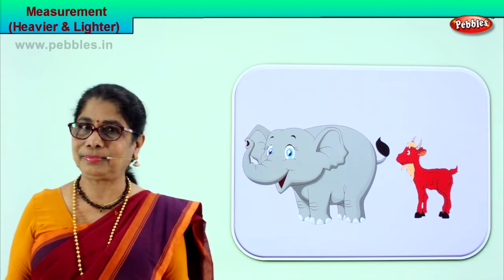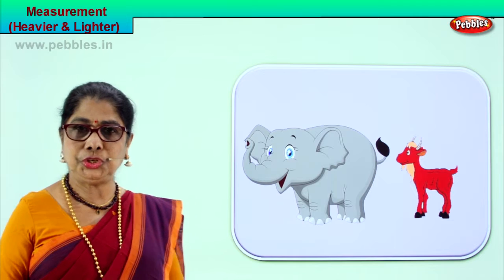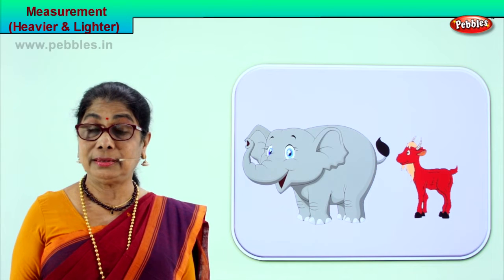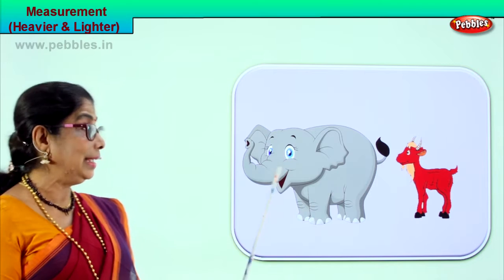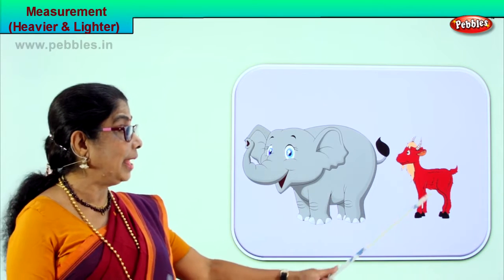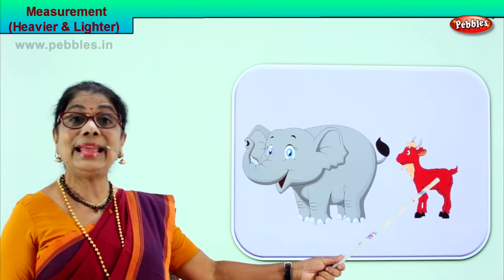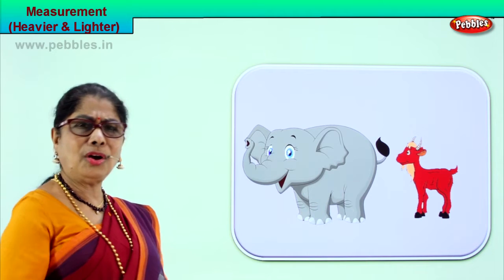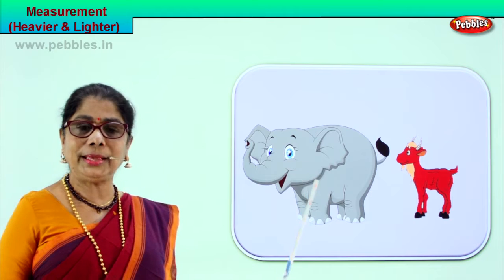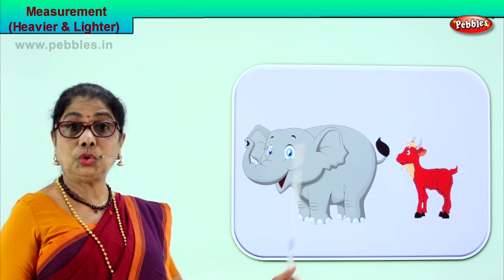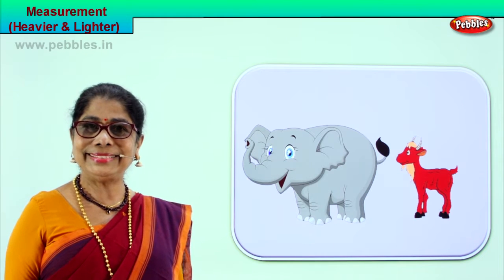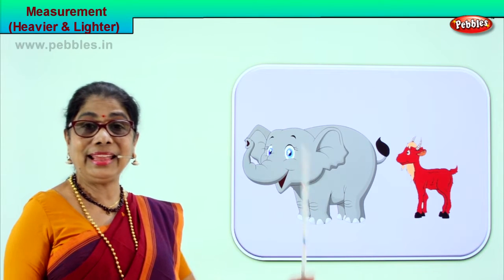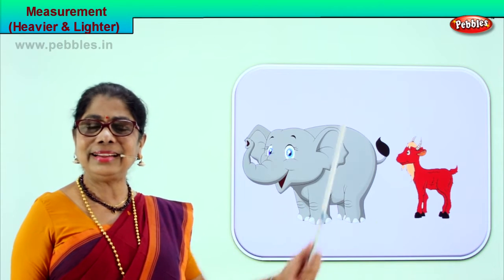Heavier, lighter. Now let's look at another picture. If you put on a big huge machine to weigh, today you have a little goat and a huge elephant. Who will weigh more? Certainly the elephant is heavier than the little goat, or the goat is lighter compared to the elephant. You put them on the machine and you see — the elephant maybe 100 to 200 kg, the goat maybe just 10 to 12 kg.